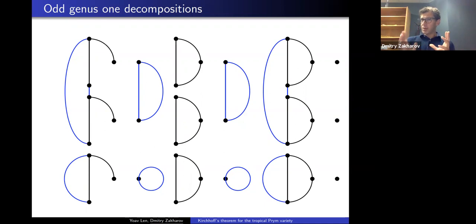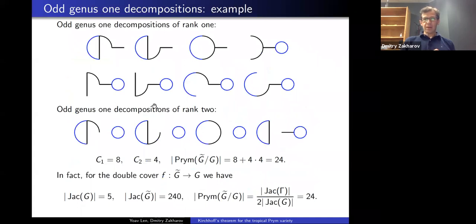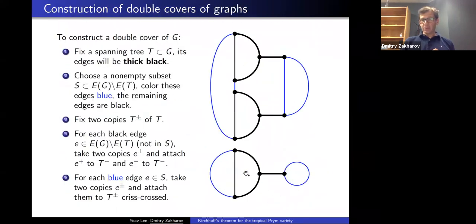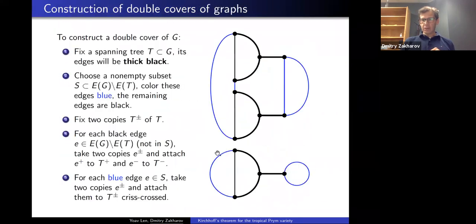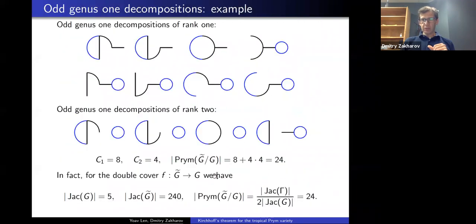An OGOD is a way of removing G − 1 edges such that the restricted cover is non-trivial on each connected component. For the example cover shown, there are eight rank-one OGODs and four rank-two OGODs. So c₁ = 8, c₂ = 4, and the predicted order of the Prym group is 8 + 4 × 4 = 24. This graph has five spanning trees and the source graph has 240 spanning trees; dividing 240 by 5 and by 2 (because the Prym group is half the kernel) gives 24 — confirming the formula.